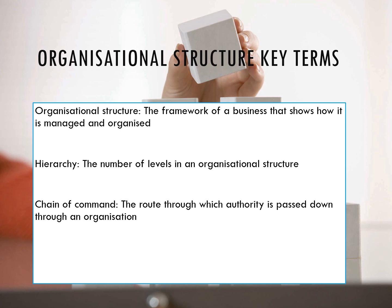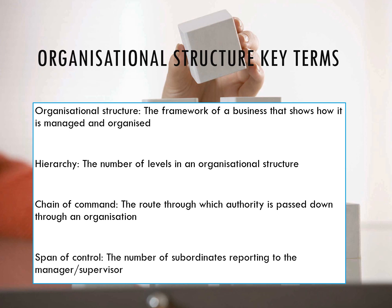The chain of command shows us the route through which authority is passed down through an organization. And finally, the span of control — this shows us the number of subordinates reporting to the manager or supervisor. A subordinate is someone who works underneath a manager or supervisor. How many people directly report to the manager is their span of control.